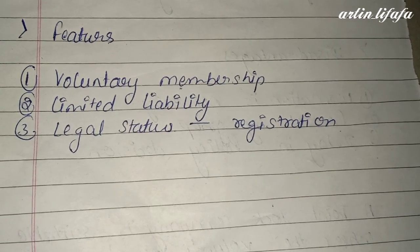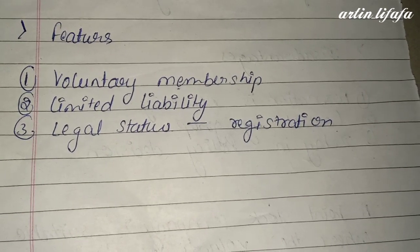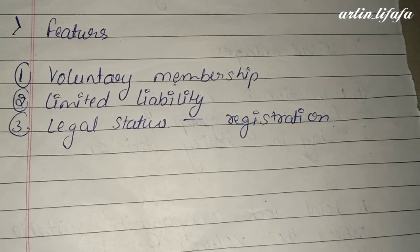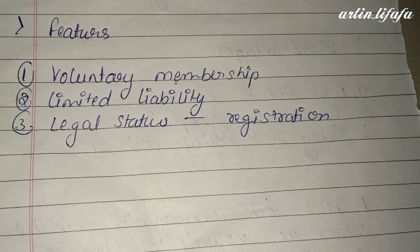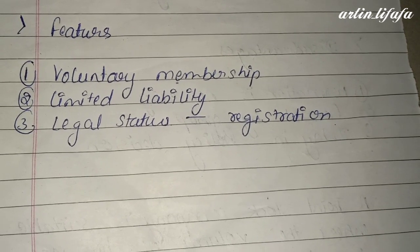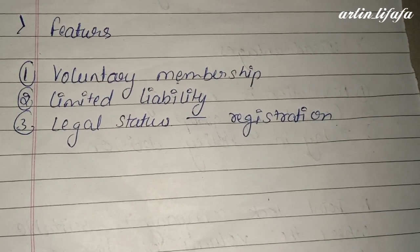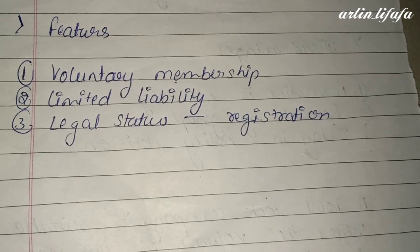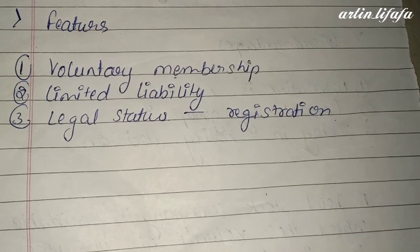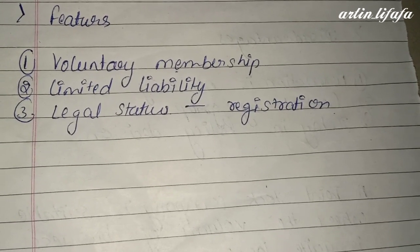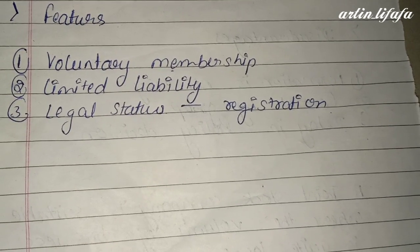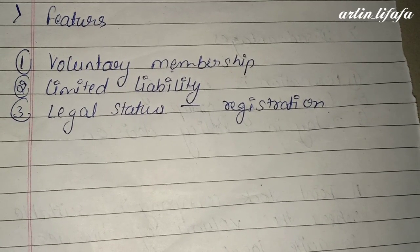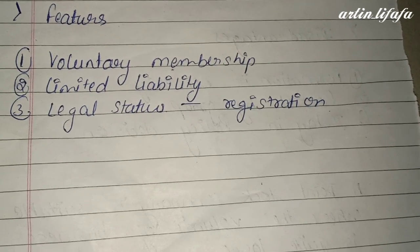Cooperative society का एक और objective है rendering service rather than earning profit — profit कमाने से ज़्यादा services provide करने पर focus होता है। Features में voluntary membership होती है — कभी भी person आ-जा सकते हैं, society पर कोई effect नहीं पड़ता। Limited liability होती है — अगर किसी ने 100 रुपए invest किए तो उसको 100 रुपए का ही loss होगा। Legal status के लिए registration mandatory होता है।